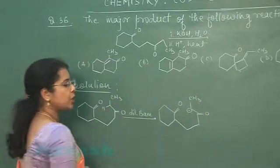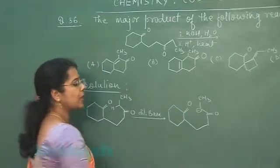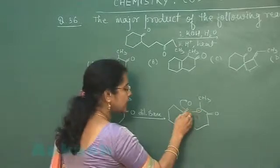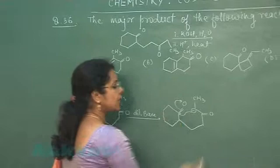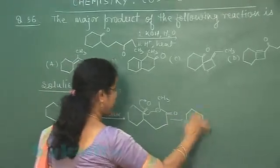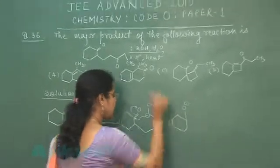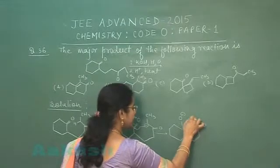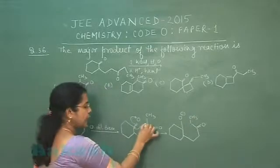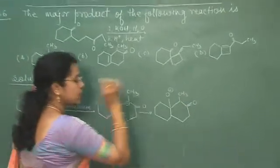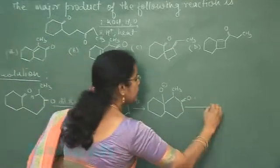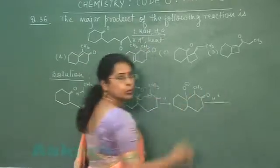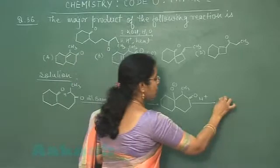This anion behaves as a nucleophile and can attack at the carbonyl group, so the pi bond will break. The negatively charged carbon atom attacks at the carbonyl carbon atom, this oxygen atom becomes negatively charged, and a new C-C bond formation takes place. The next step given in the question is addition of a proton, which will attach to the oxygen atom.